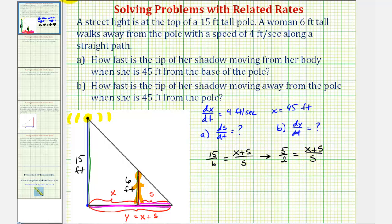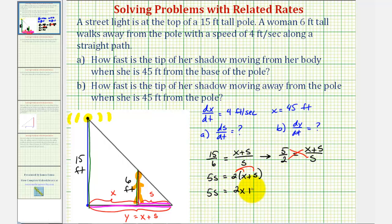Now let's cross multiply: five times s must equal two times the quantity x plus s. That gives us five s equals two times the quantity x plus s. Distributing, we have five s equals two x plus two s. Subtracting two s from both sides gives three s equals two x. Dividing both sides by three, we have s equals two-thirds x.